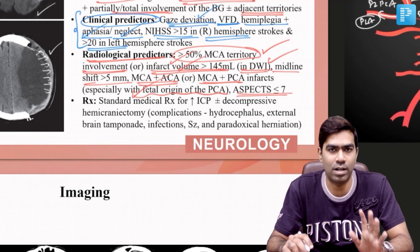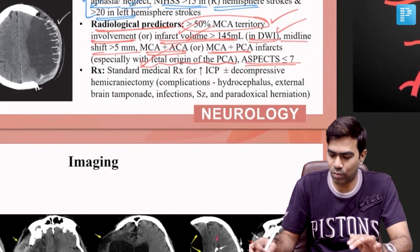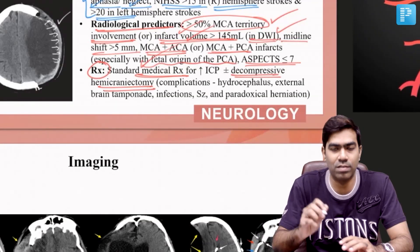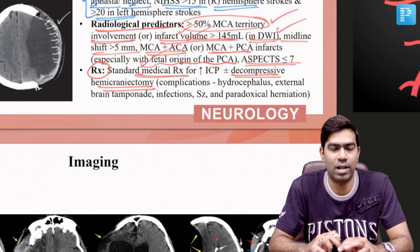Treatment involves standard medical management including head elevation by 30–45 degrees, therapeutic hyperventilation maintaining PaCO₂ in the range of 30–35 mmHg, and osmotic agents like mannitol or 3% NaCl. However, remember that when malignant cerebral edema develops, medical therapy alone is only transient — the definitive therapy is decompressive hemicraniectomy.